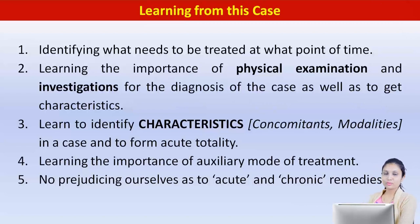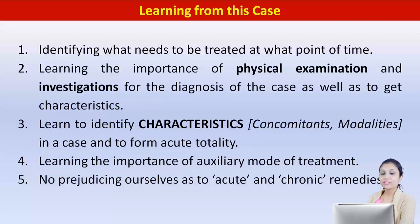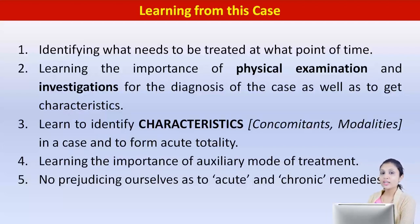The remedy response: within two hours the pain had reduced by 30%, and by evening she was better by 60%. The next day there was only mild discomfort and no pain — confirming the remedy was absolutely spot on. This is how relief must be achieved in acute cases. The key learnings from this case are: identifying what needs to be treated at what point in time; the importance of physical examination and investigations; learning to identify characteristics for an acute totality including concomitants, modality, and location; the importance of auxiliary treatment; and not prejudicing ourselves about acute versus chronic remedies.